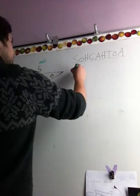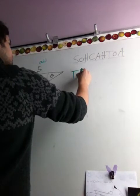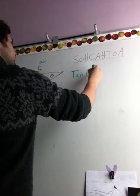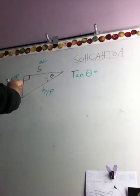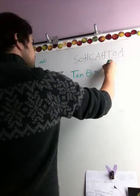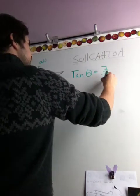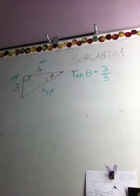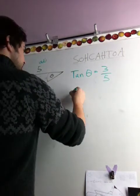So the tangent of theta equals opposite over adjacent. Three over five. Now, if you go three divided by five on your calculator, you'll get zero decimal six. And that's what we get here.